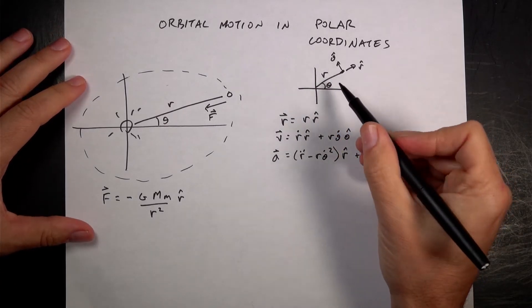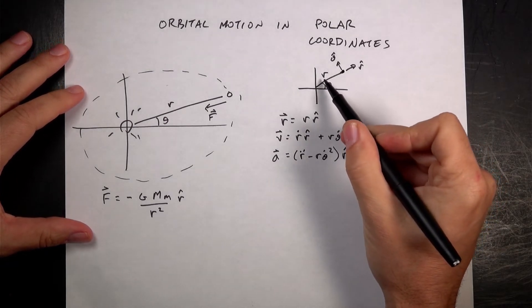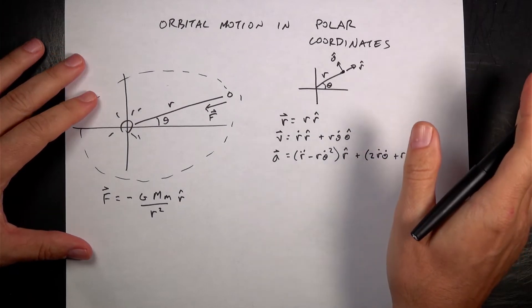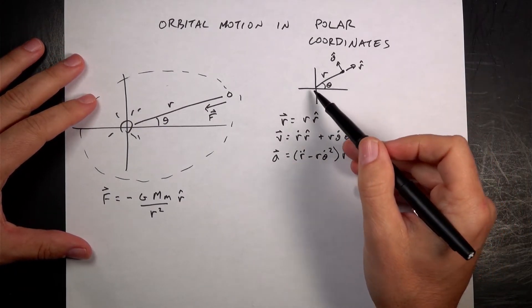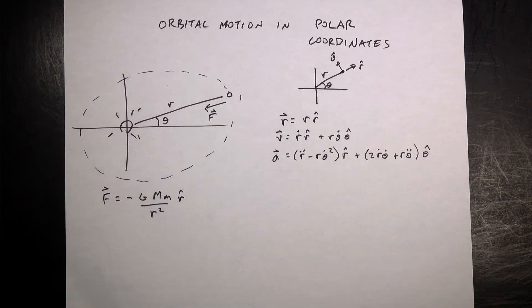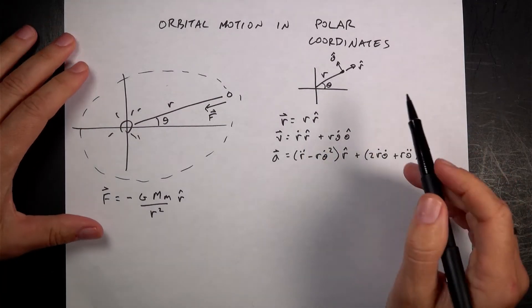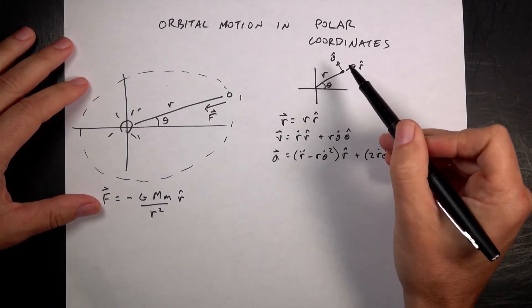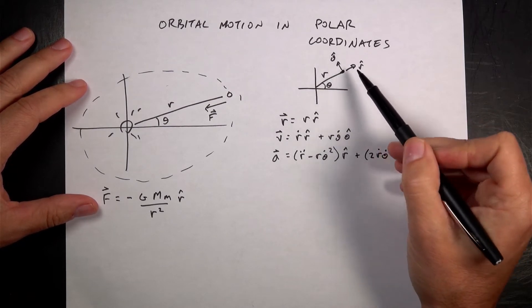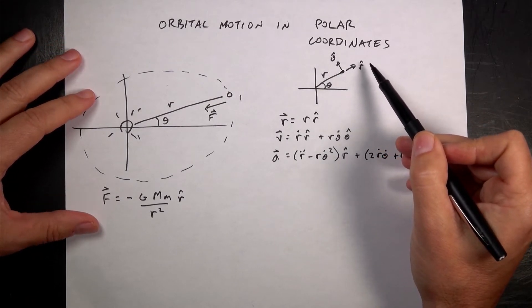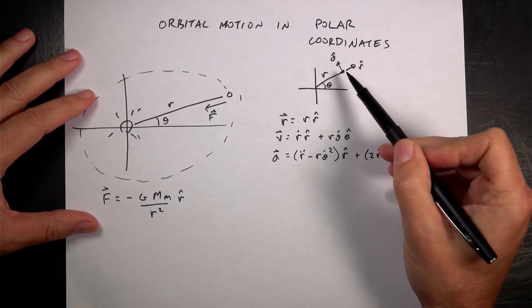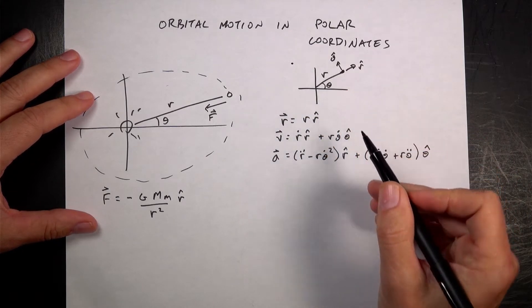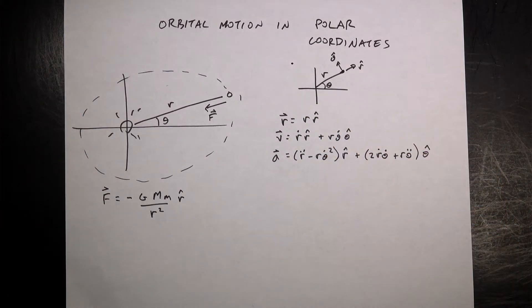In polar coordinates, we represent the location of an object with the variables r and theta. Theta is measured from the x-axis — I'm going to use theta. r is the distance from the origin to that point, and we're going to put the star at the origin. The unit vectors r-hat and theta-hat change as the object moves, so they are not constant.